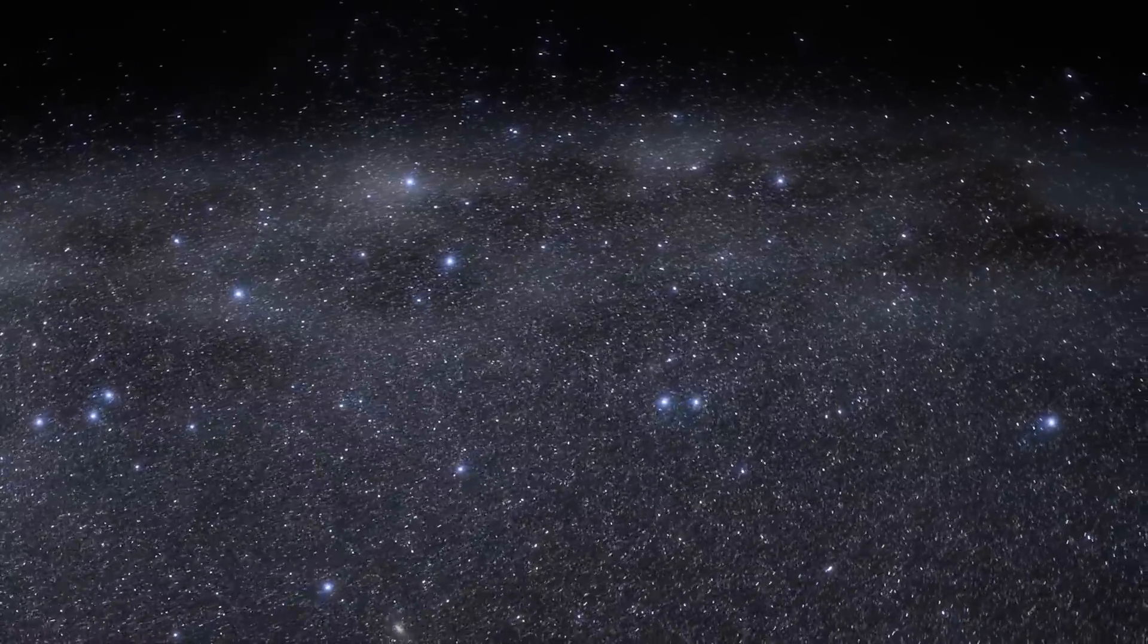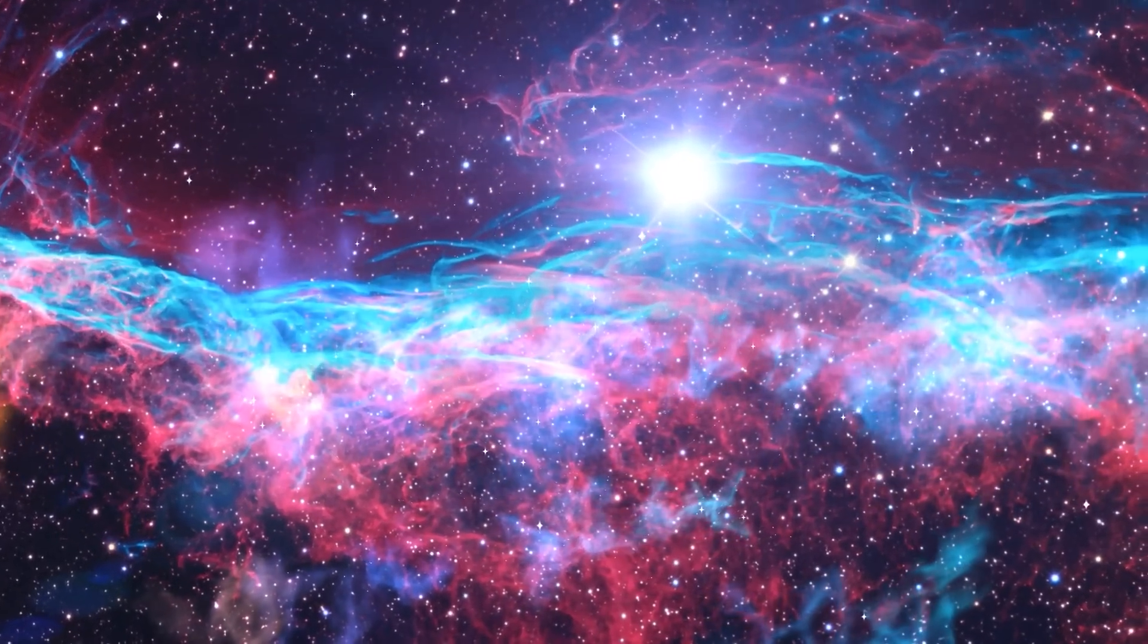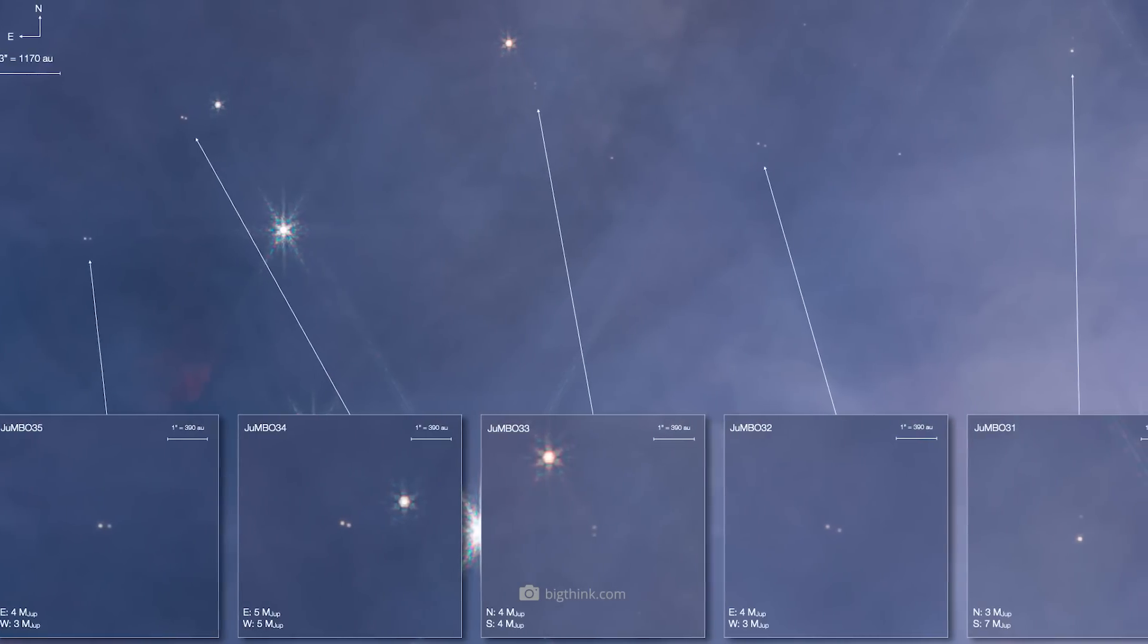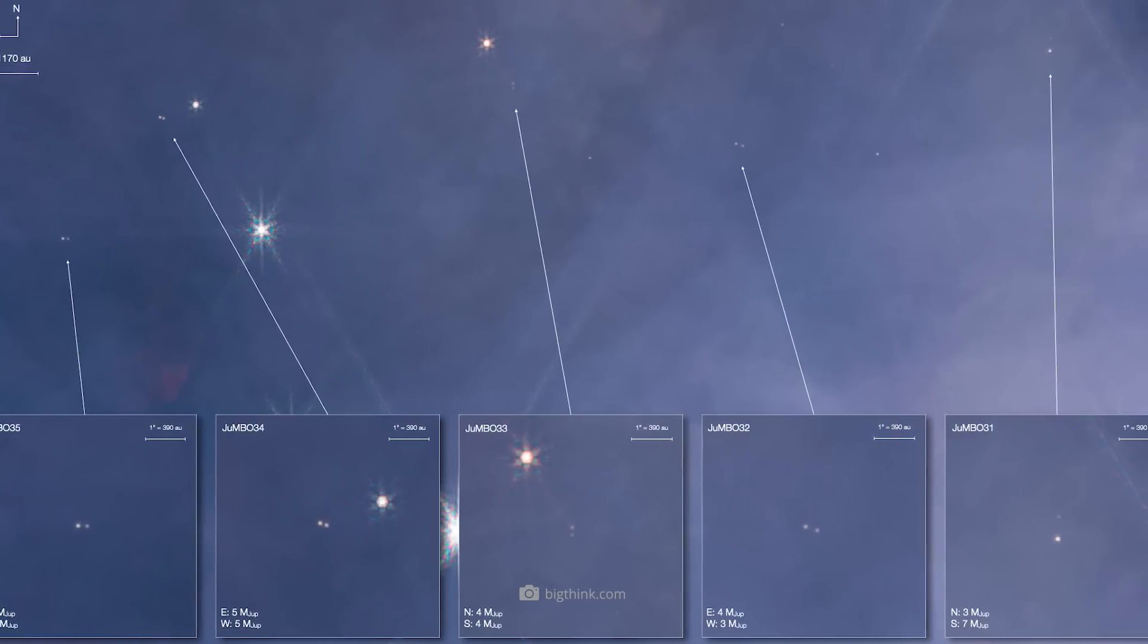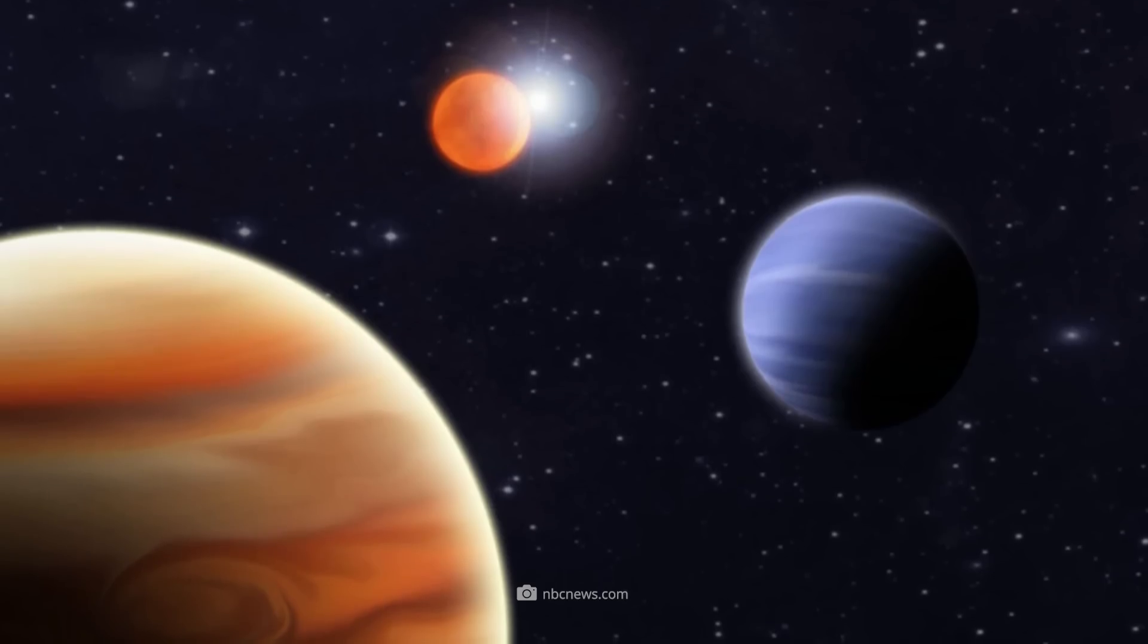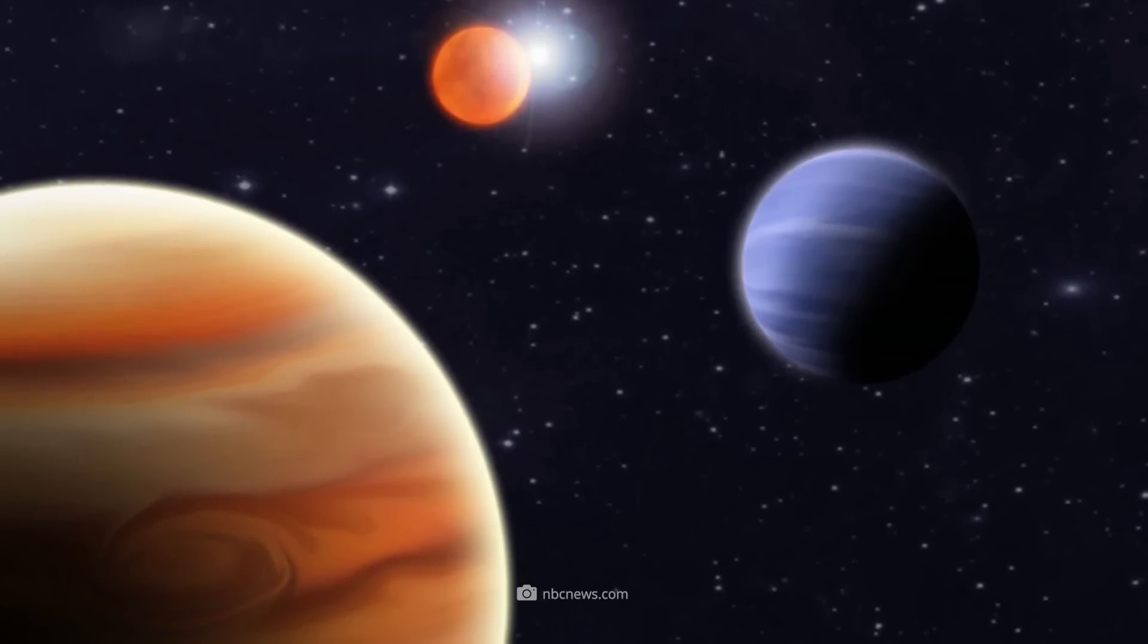Namely, believe it or not, 40 free-flying planets in one fell swoop, which, as already mentioned, come without a mother star. Although rogue planets have been discovered in the Orion Nebula in the past, these representatives are particularly massive celestial bodies: so-called Jupiter mass binary objects, or in short, jumbos.